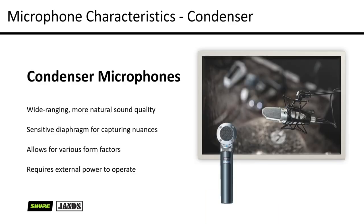When we get into condenser microphones, they have a few more components inside. It's worth noting that we can get a wider-ranging, more natural sound. They are a lot more sensitive and able to capture those slightly more delicate, hidden nuances in certain sound sources. Because of the smaller components, they can be fitted into a much smaller form factor — so we generally see condenser microphones in things like lavaliers for clipping onto your shirt, or in headsets.